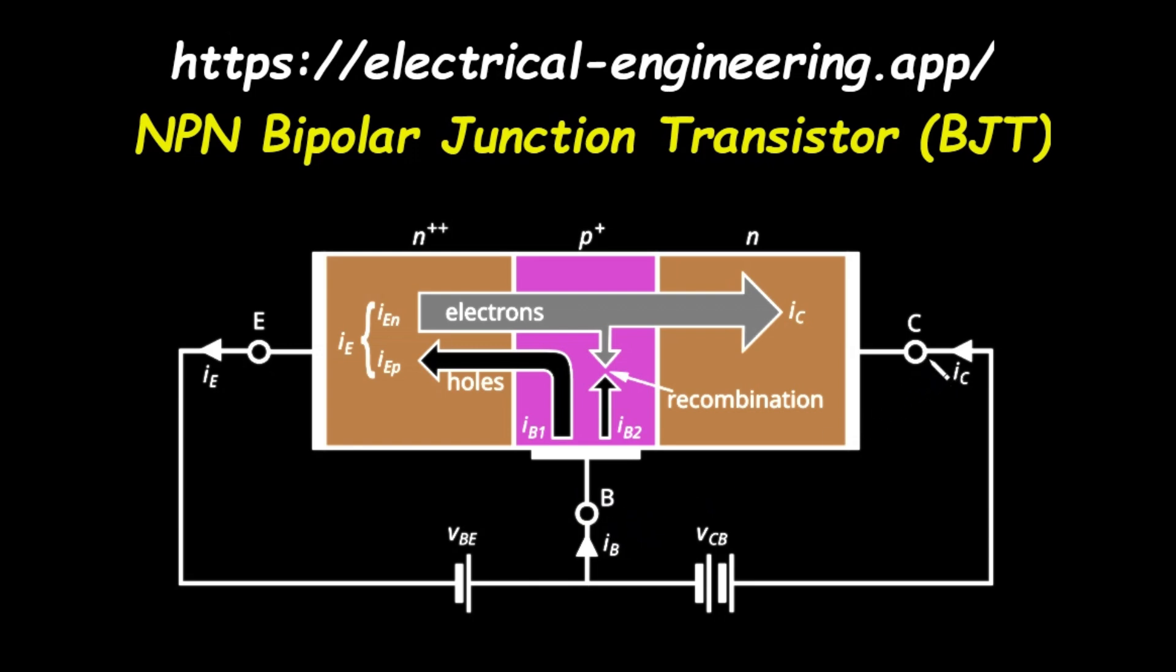These regions are made of semiconductor material, which has been doped to create specific electrical properties. The emitter is labeled N double plus, the base is P plus, and the collector is N. Let's quickly review what this means. N stands for N-type material, where the majority of charge carriers are free electrons. P stands for P-type material, where the majority of charge carriers are holes, which are essentially the absence of an electron and behave like positive charges.